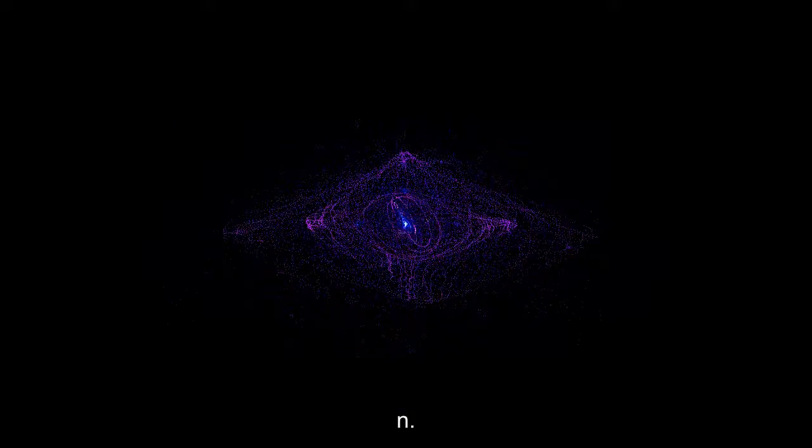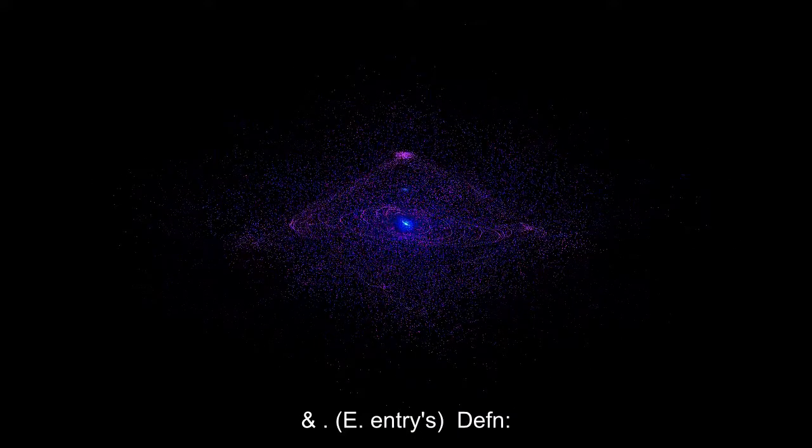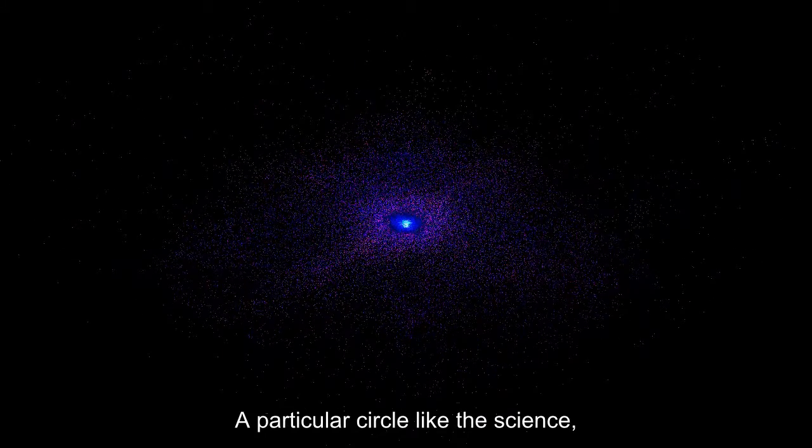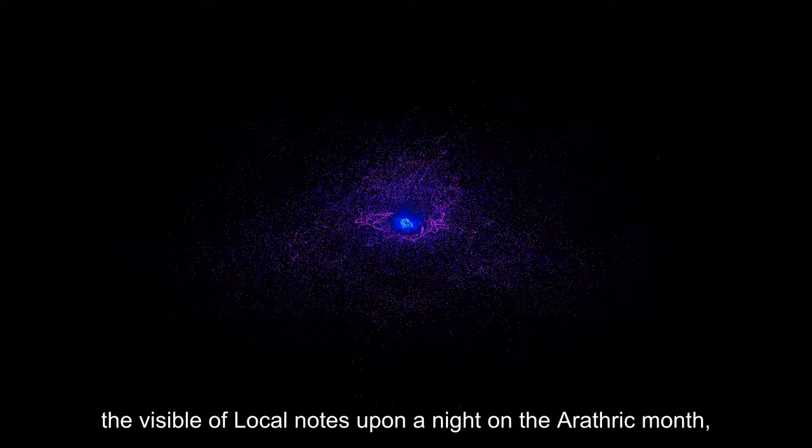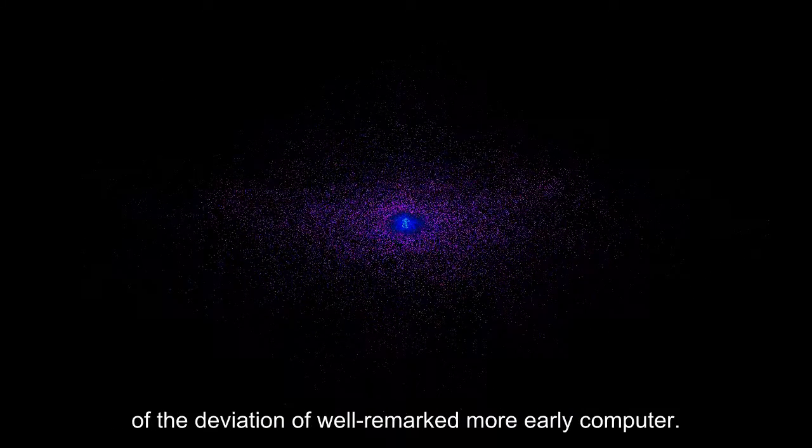H-O-R-S-E-L-I-L-L-Y ho asterisk L-O P-Y. N-E-T-Y-M. G-R. And E, entries. D-E-F-N. A particular circle like the science, as hoping, etc., the visible of local notes upon a night on the arathric month, of the deviation of well-remarked more early computer.